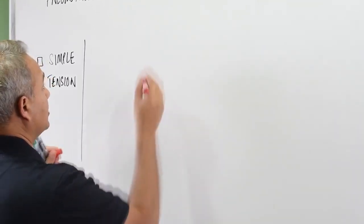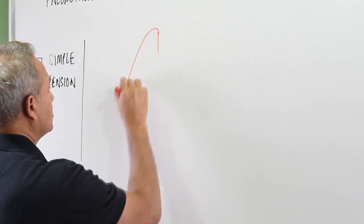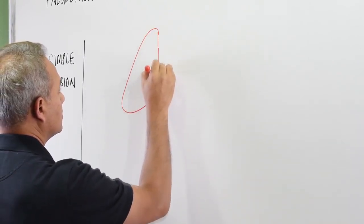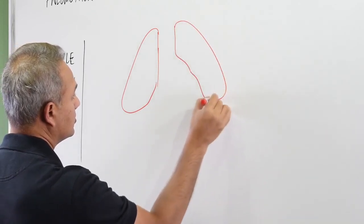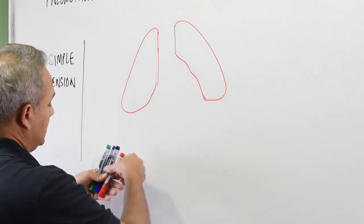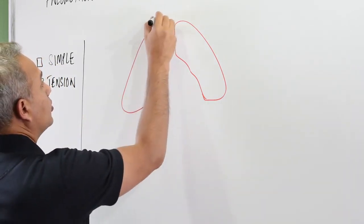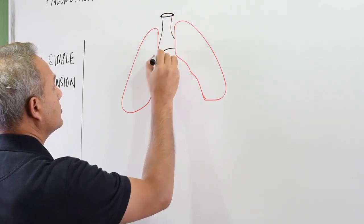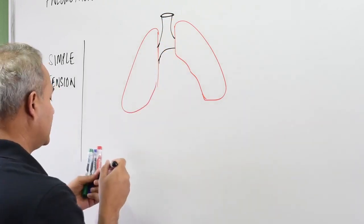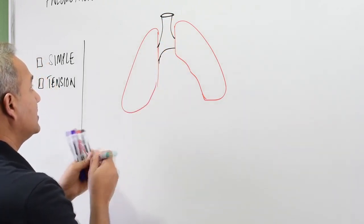Here is what happens in the normal chest. Let's say if I make two lungs here and we make trachea and the bronchi.